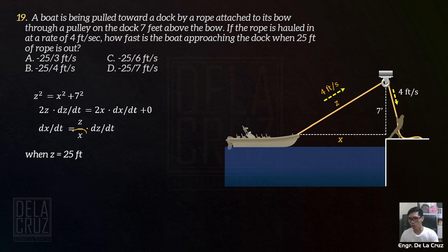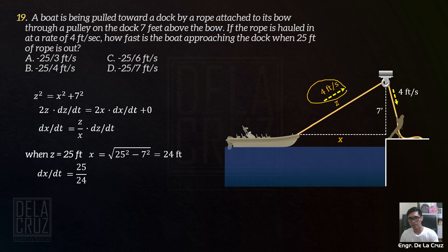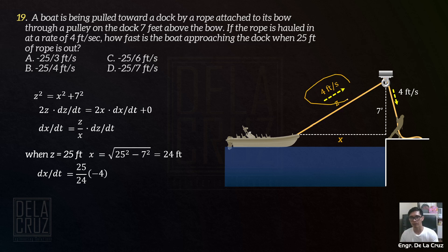Paano naman si X? Kukunin natin yung X based sa relation ni Z at X dito. From that, X is equal to square root of Z squared minus 7 squared, which is square root of 25 squared minus 7 squared. So X is 24 feet. So substituting Z and X dito, and dZ over dT is negative 4 feet per second — negative kasi yung effect nito is shortening — the dX over dT is equal to Z=25 over X=24 times negative 4.